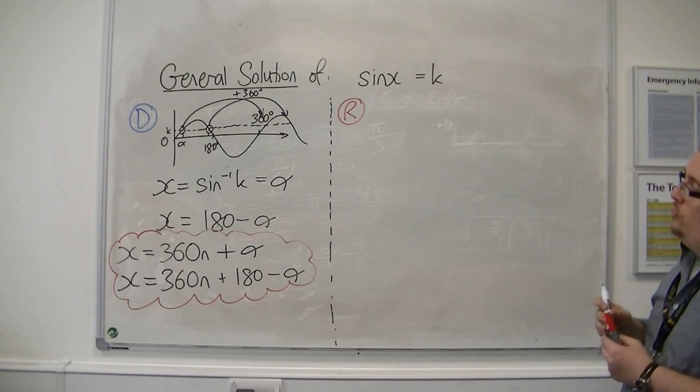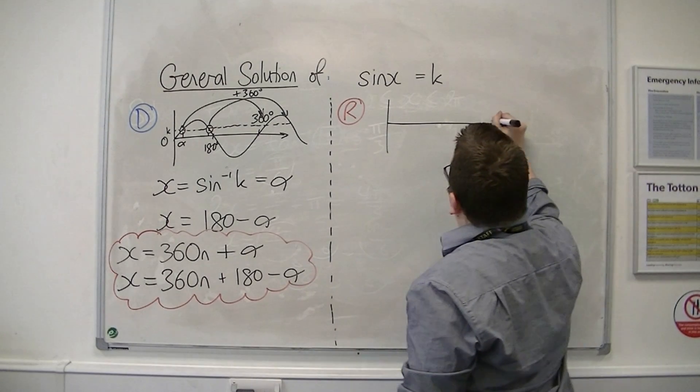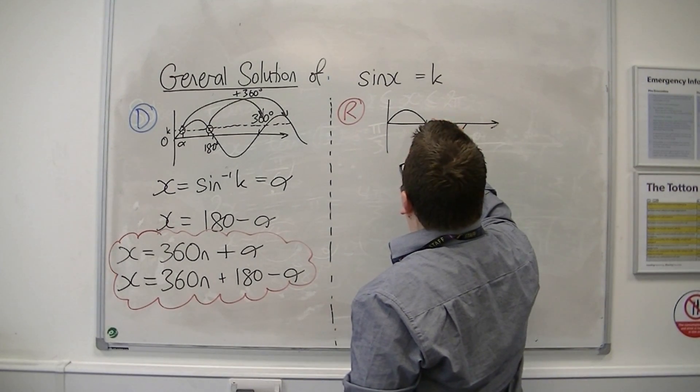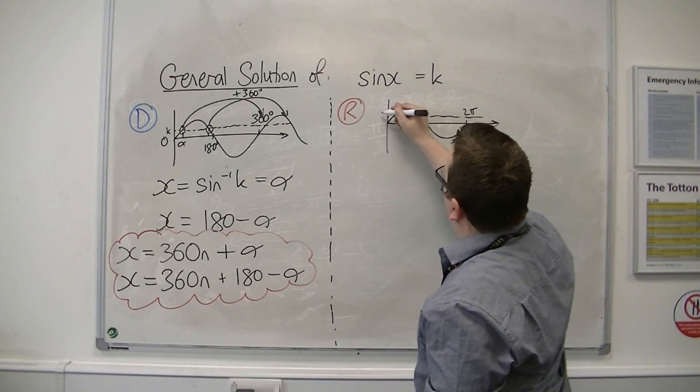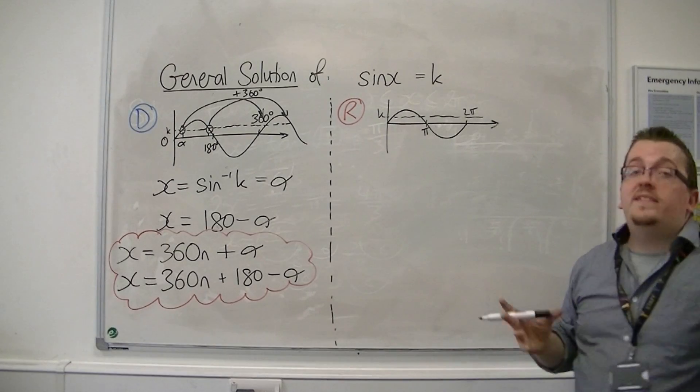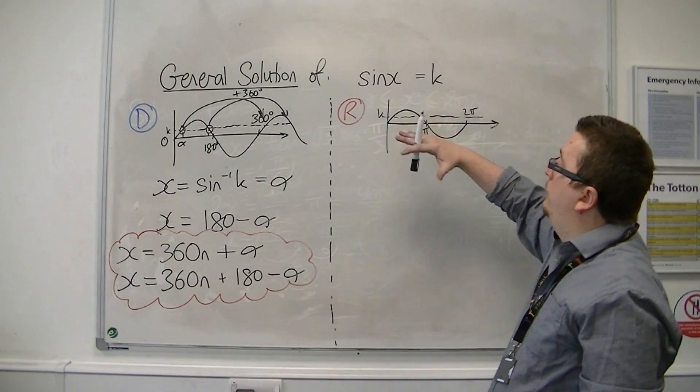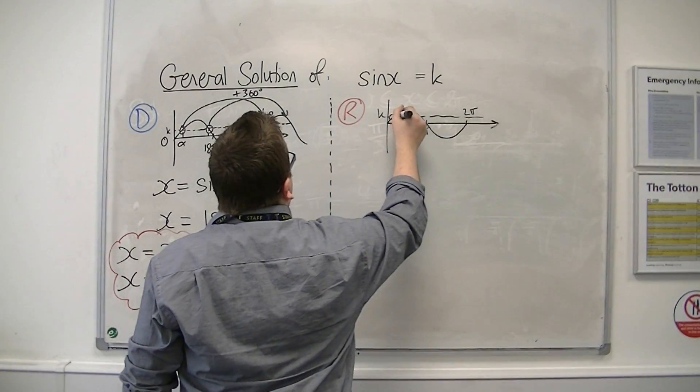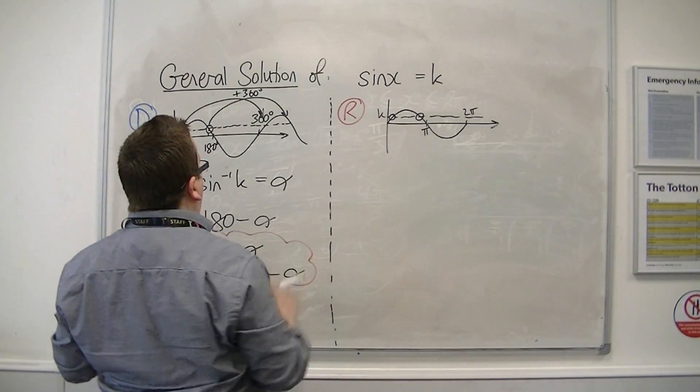So, what about radians? It's much the same story. It's exactly the same concept. There's my value of k. Oh, and by the way, it doesn't matter if k is positive or negative here, if it's above the x-axis or below. It doesn't matter. Still the same equations. Two points.